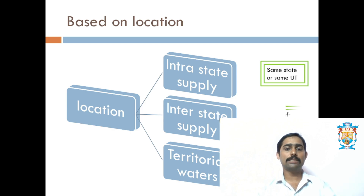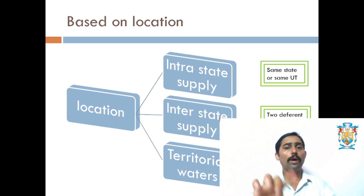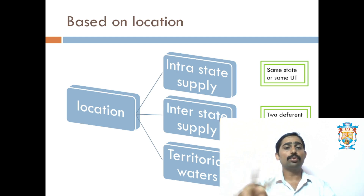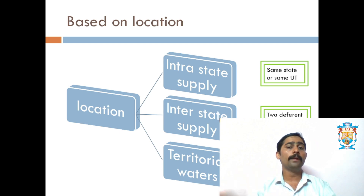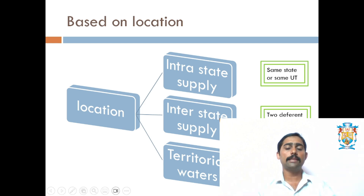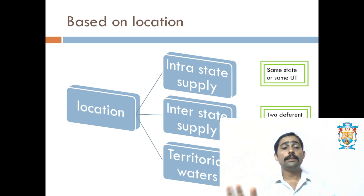Next comes interstate supply — a kind of transfer where two different states are involved: one state and one union territory, or two different union territories. Sale or transfer takes place between these two. Similarly, the third type is territorial waters, where transactions take place and the place of supply is in territorial waters. So based on location we have three types: intrastate, interstate, and territorial waters.